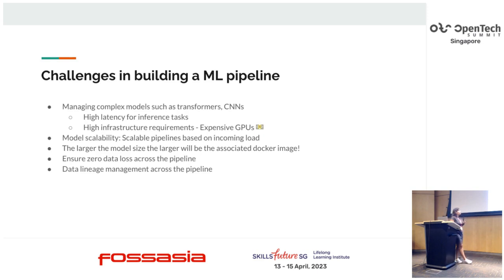This ML pipeline started when the data science team came up with the problem of deploying transformer models. Specifically, this talk focuses on deploying complex models. When the data science team introduced transformer models, we took that model and deployed it into our then-current ML serving pipeline, which was more of a real-time API system. After deploying that transformer-based model, we saw that we were facing high latencies.